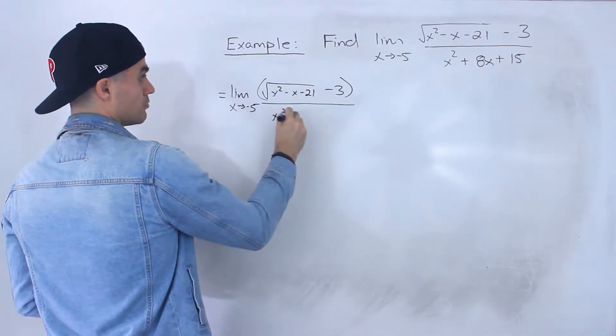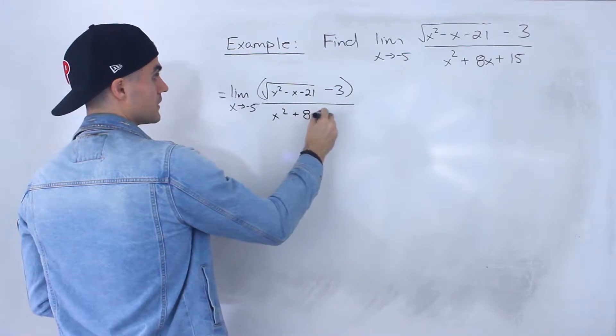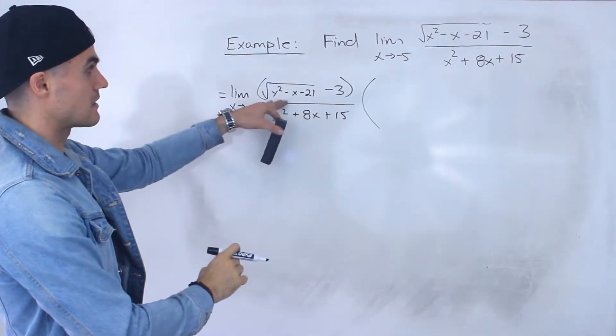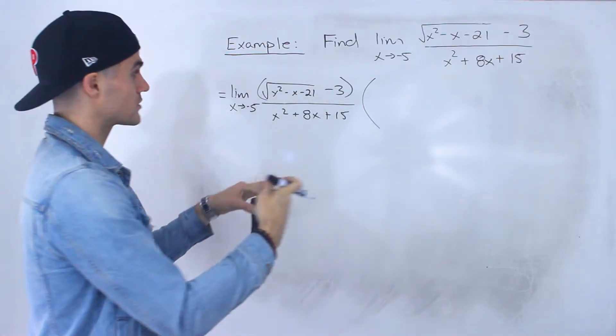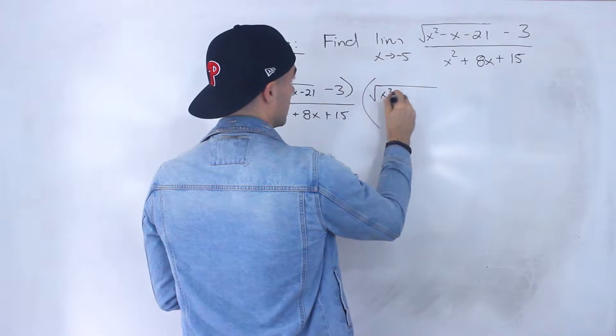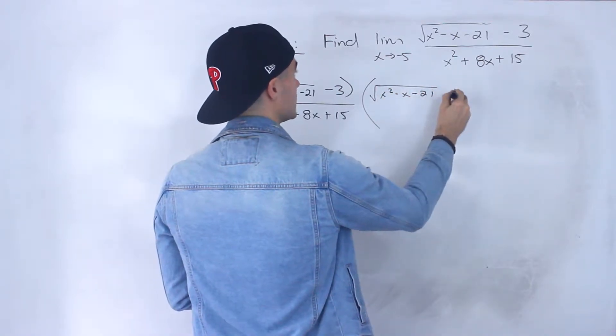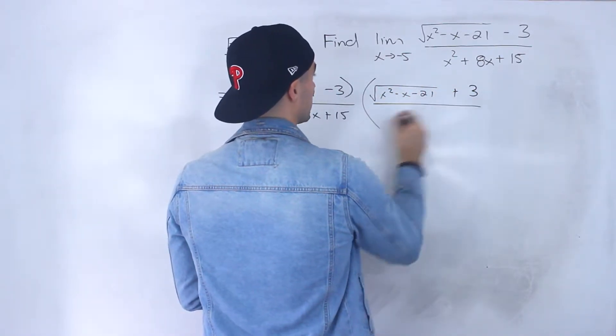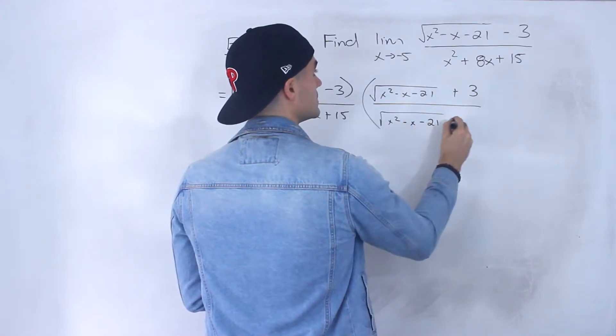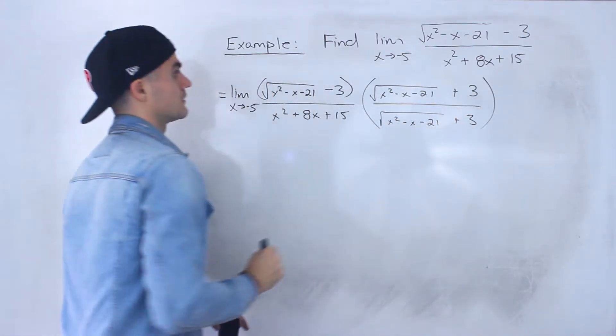And so we're going to multiply this by the conjugate, the numerator's conjugate. So we're going to keep the ends the same and just change that sign in the middle. But if we multiply the numerator, we've got to also multiply the denominator like that.